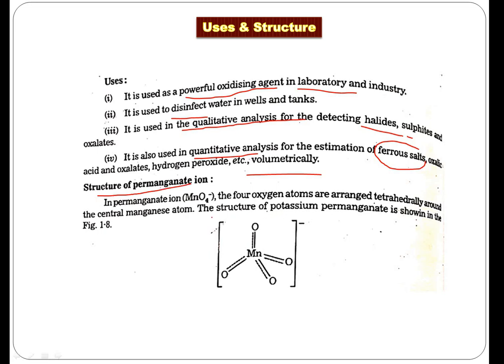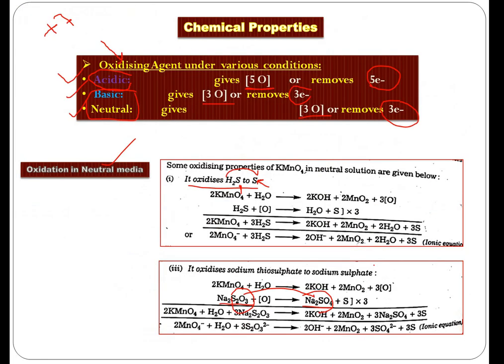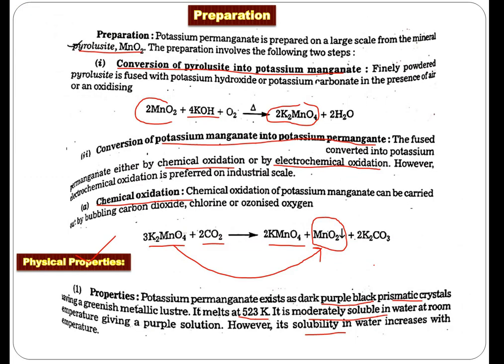Now, if we talk about the structure, you can see here, it's a tetrahedral, typical tetrahedral structure. There is a single bond here, and then three double bonds. So it has tetrahedral geometry, that is sp3 hybridization. So this is all we have: the important points regarding the chemical properties and the preparation.